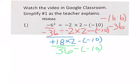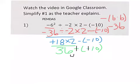Then we have 36 minus a negative 10. Whenever you subtract a negative, you leave 36, change the subtraction to addition, and add the opposite integer. So 36 plus 10 is positive 46, and that's our answer.